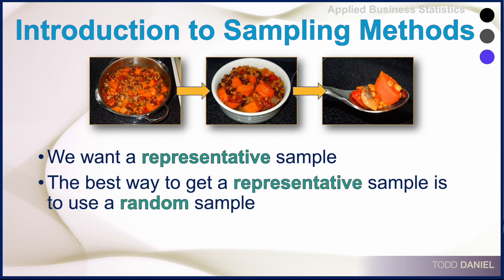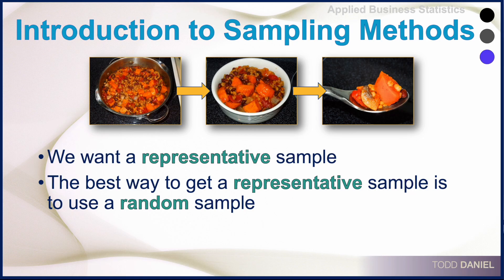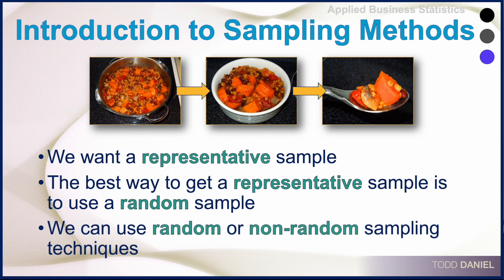The best way to get a representative sample is to use a random sample. A random sample does not guarantee that the sample will be representative, but it is the best way we have to get close. We can use either random or non-random sampling techniques to get our sample. Let me start with the simplest, most basic approach to random sampling — it's called simple random sampling.